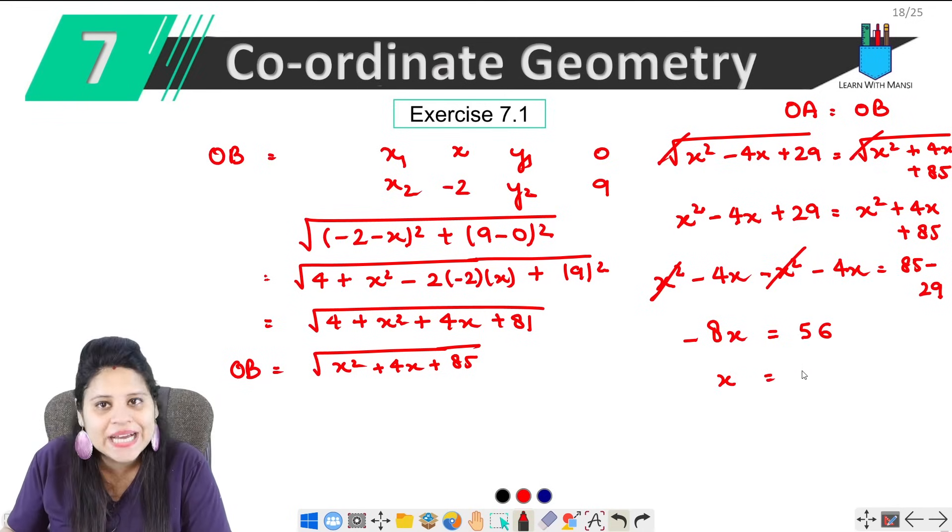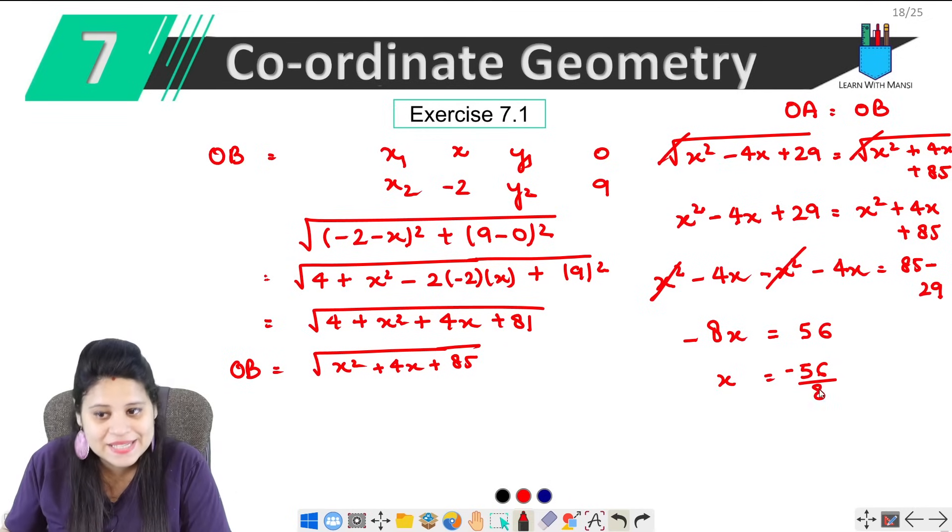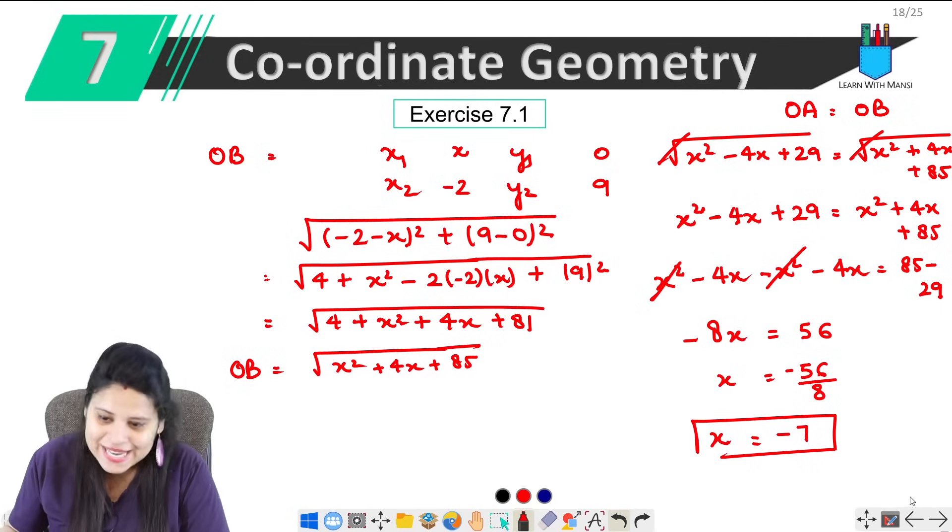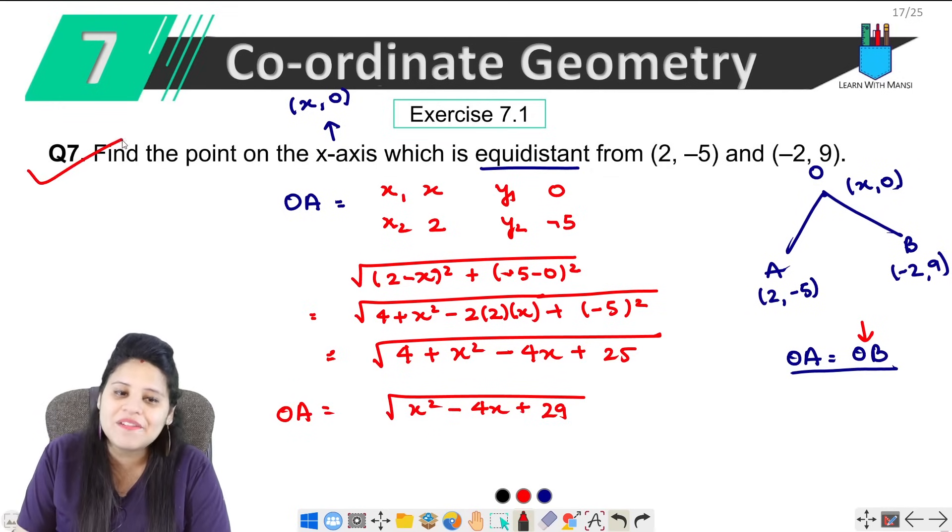We will find x's value which will be 56 upon -8. We have 56, 8 times 7 is 56. Therefore, x's value is -7. So this was our seventh question.